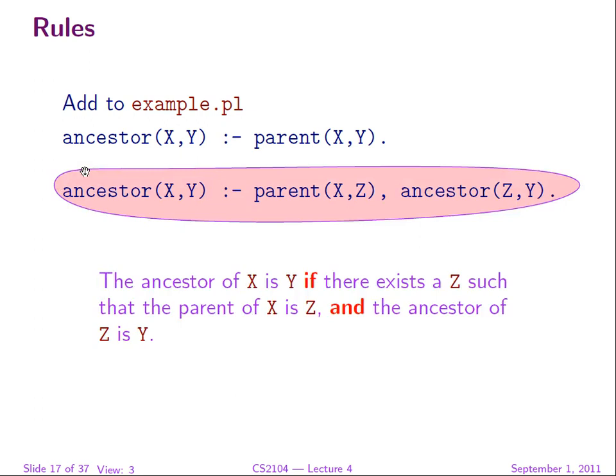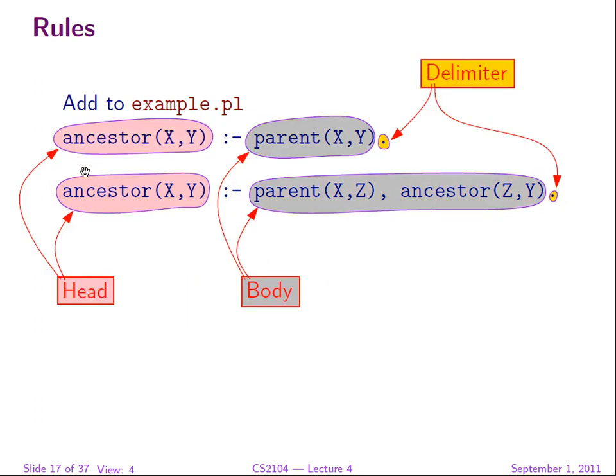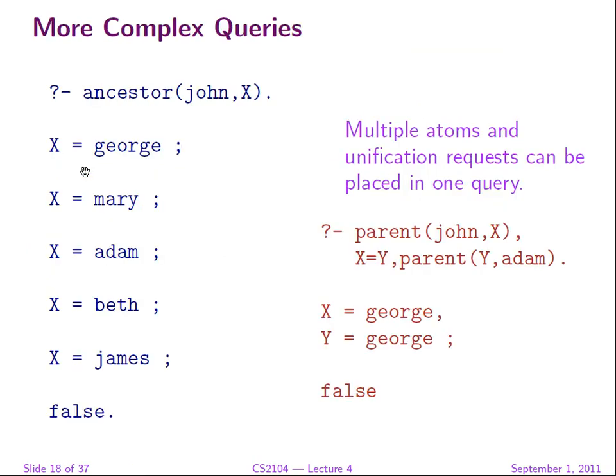In the resolution algorithm, one important concept is variable renaming. Whenever we use a clause for execution, the variables in that clause are renamed with completely new names that haven't been seen before. In this way variables are local to a clause. This X and that X in different clauses have nothing in common. Renaming: X becomes X1, Y becomes Y1, Z becomes Z1 in the first renaming; X becomes X2 in the second renaming. Every time the variables are completely fresh.